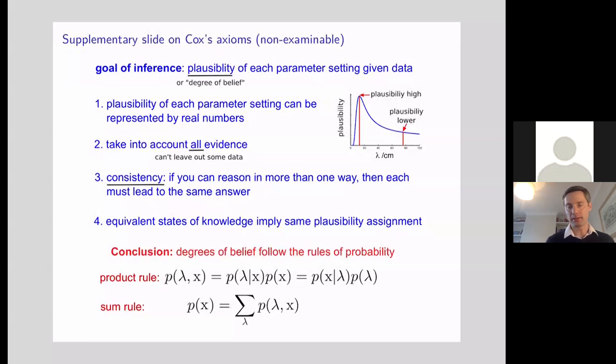So I promised a supplementary slide on Cox's proof that in order to perform consistent inferences, you need to use the rules of probability and anything else just doesn't cut it and will result in inconsistencies. We're going to take a few minutes just to go through that here.